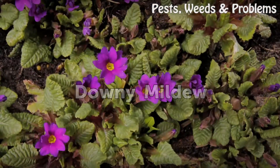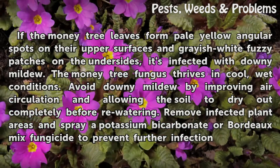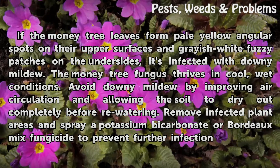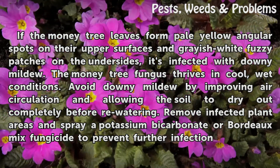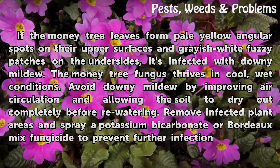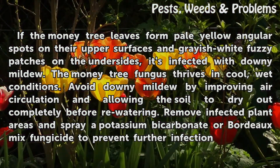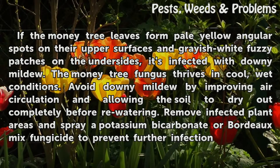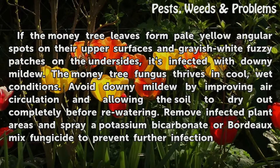Downy Mildew: If the money tree leaves form pale yellow angular spots on their upper surfaces and grayish-white fuzzy patches on the undersides, it's infected with downy mildew. The money tree fungus thrives in cool, wet conditions. Avoid downy mildew by improving air circulation and allowing the soil to dry out completely before re-watering. Remove infected plant areas and spray a potassium bicarbonate or Bordeaux mix fungicide to prevent further infection.